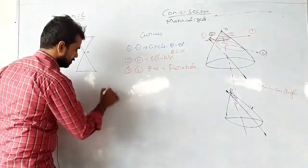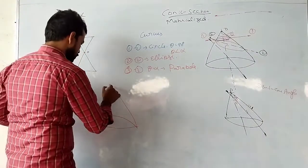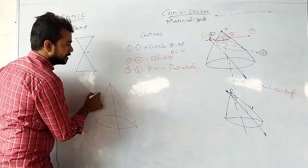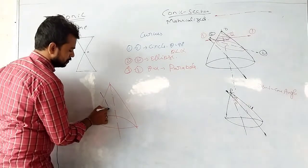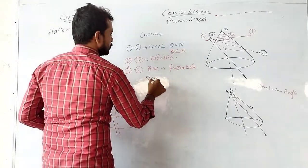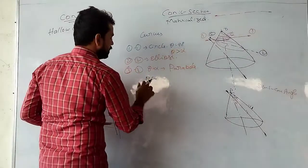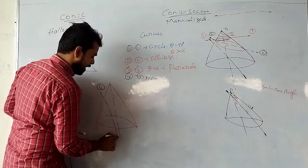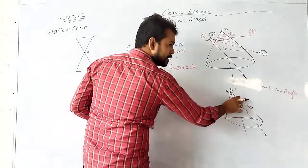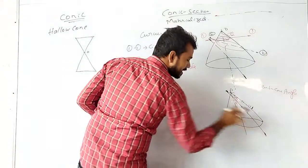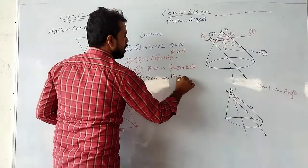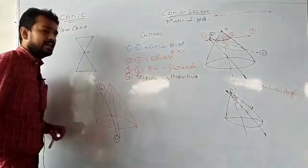There is another case: when theta is greater than alpha, and the section plane is not passing through the axis — it is unable to cut the axis. In this case, the curve you get is a hyperbola.